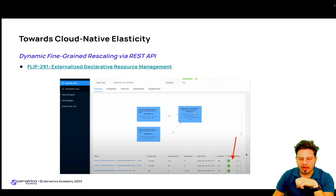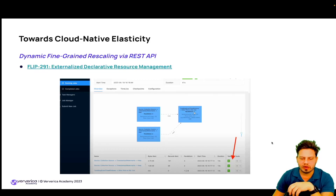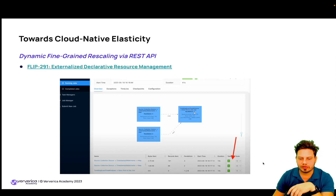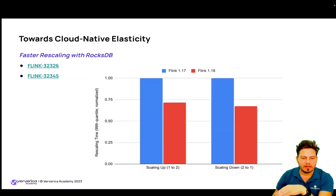Through the Flink Web UI, you can now change the parallelism and scale different operators individually up and down. For example, when you notice back pressure and see operators highlighted in red, you can increase parallelism, or if an operator is mostly idle, you can downscale it to a lesser parallelism. This is really important for running in cloud native environments.